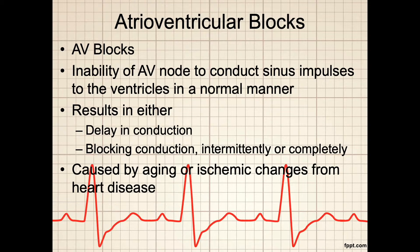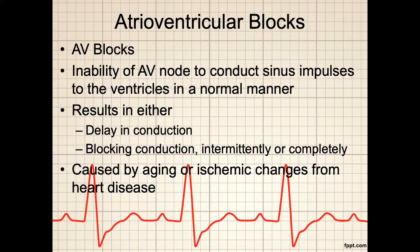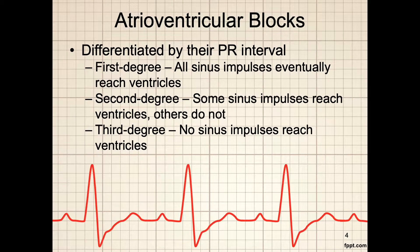Atrioventricular blocks occur when the junction is unable to conduct sinus impulses to the ventricles in a normal manner. This results either in a delay in conduction or a complete block, which can happen intermittently or can be a complete block where none of the impulses ever get from the atria to the ventricles. Main causes include aging, but more likely ischemic changes from heart disease. When reviewing your ECG strip, AV blocks can be differentiated by the characteristics of the PRI — that is, the PR interval.